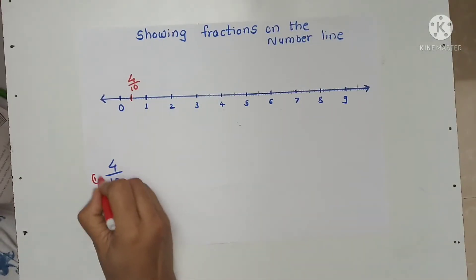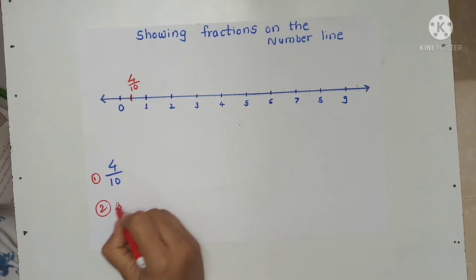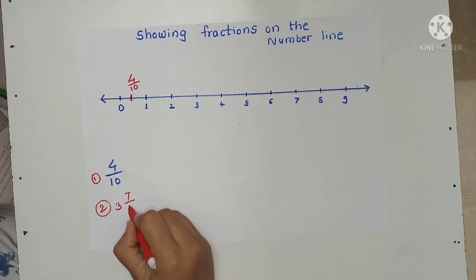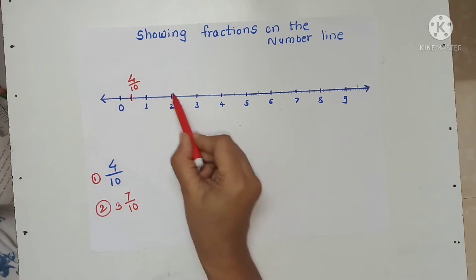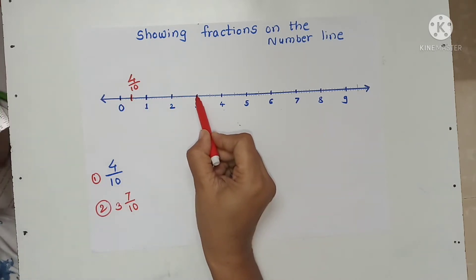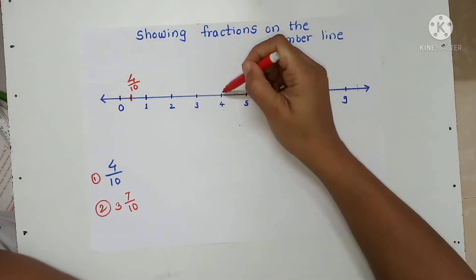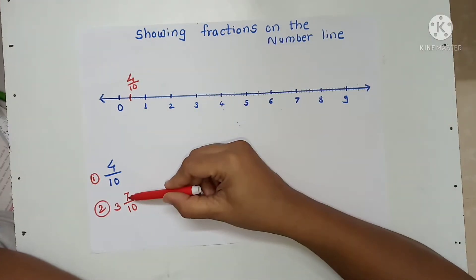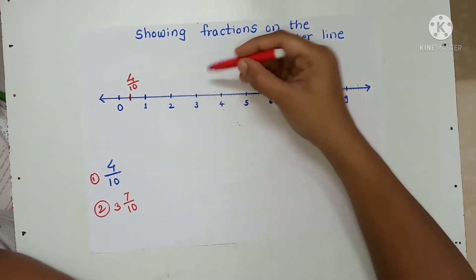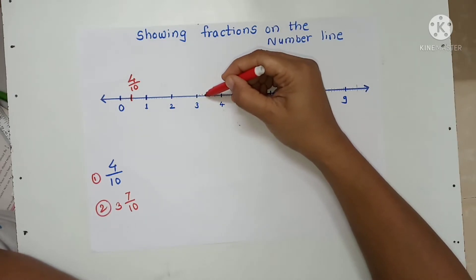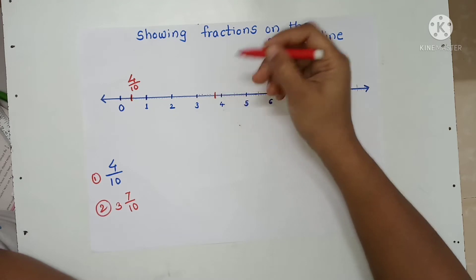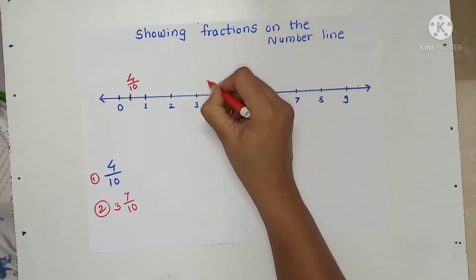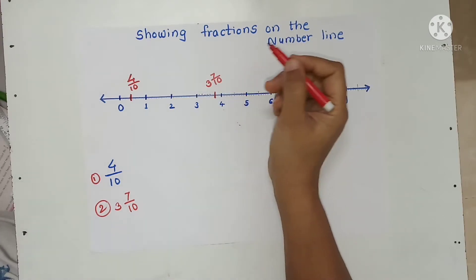The next fraction is 3 and 7 upon 10. From 0, counting 1, 2, and 3 — this is whole number 3. Then between 3 and 4, there are 10 lines, and we have to mark on the 7th line: 1, 2, 3, 4, 5, 6, 7. This is the 7th line, so this is our fraction 3 and 7 upon 10.